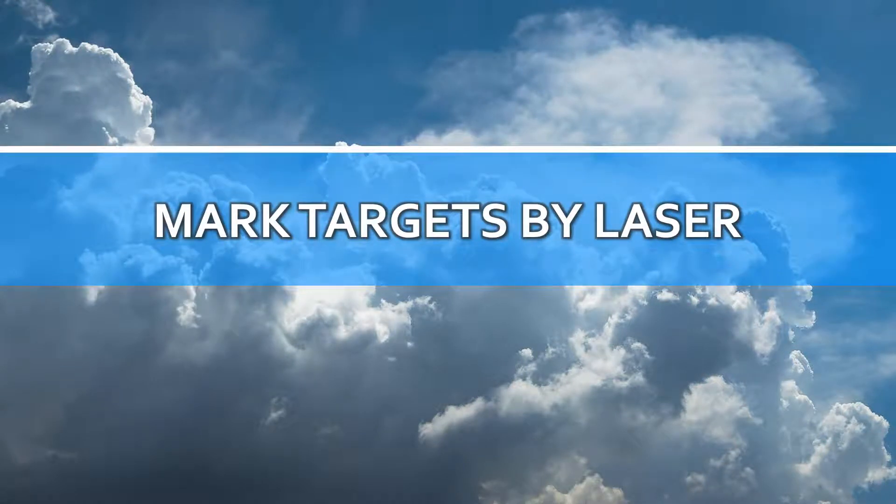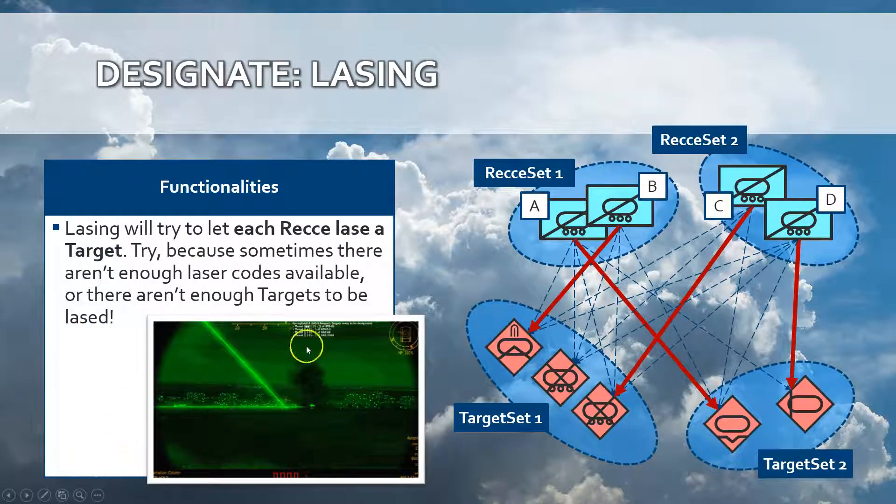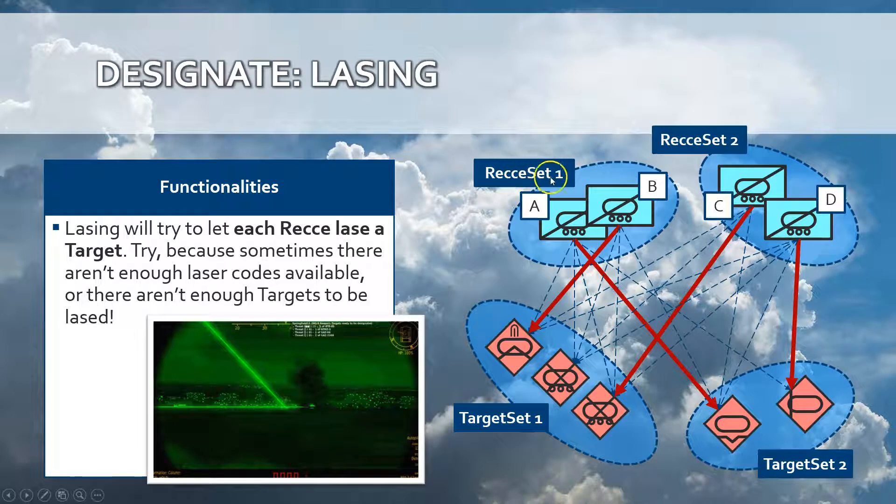Detection can be used to mark targets. The first possibility to mark targets is by laser. As the picture shows, the reconnaissance vehicles detecting targets can be ordered to start marking individually a target from the target sets that have been selected. In this example, the reconnaissance vehicles have been ordered to lase the targets in target set 1 and target set 2.